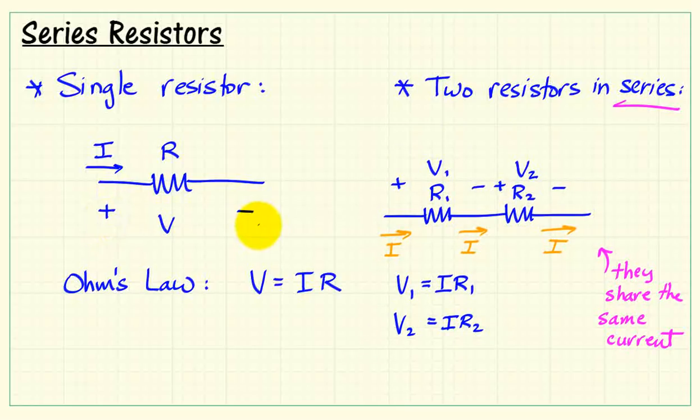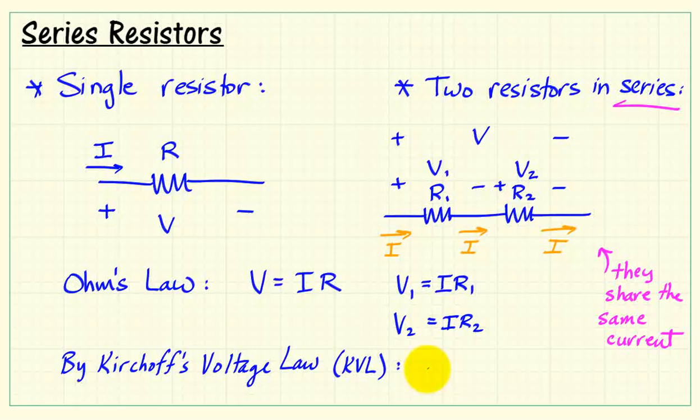Now, the voltage that appears across that single resistance, I was calling V, we can also consider the voltage that appears across the series combination. Here we can invoke Kirchhoff's Voltage Law. It says the sum of the voltages around a closed path is equal to zero. If I start here and take a path that includes all the voltages, I would write minus V plus V1 plus V2 is equal to zero.